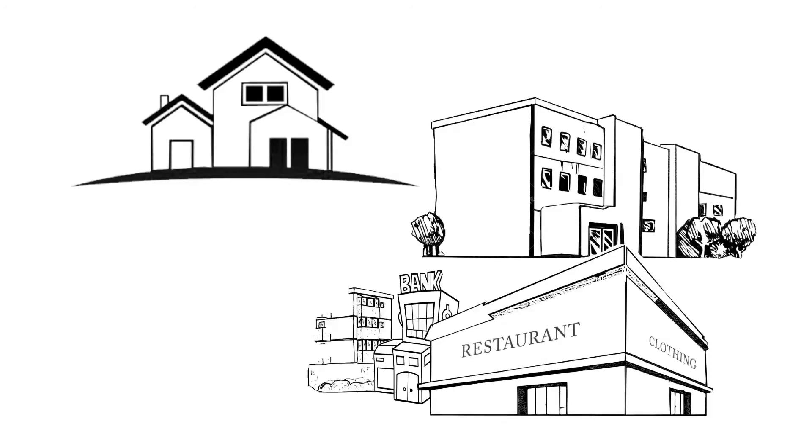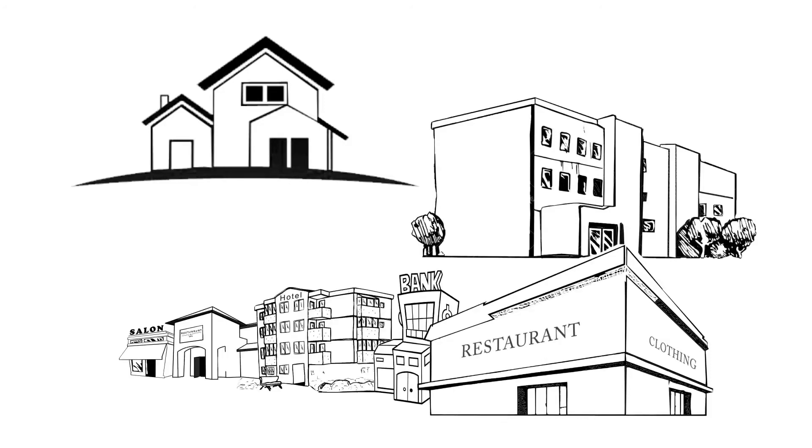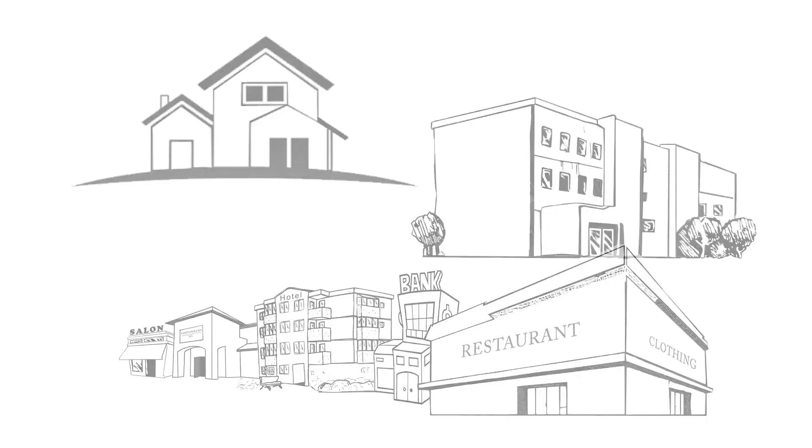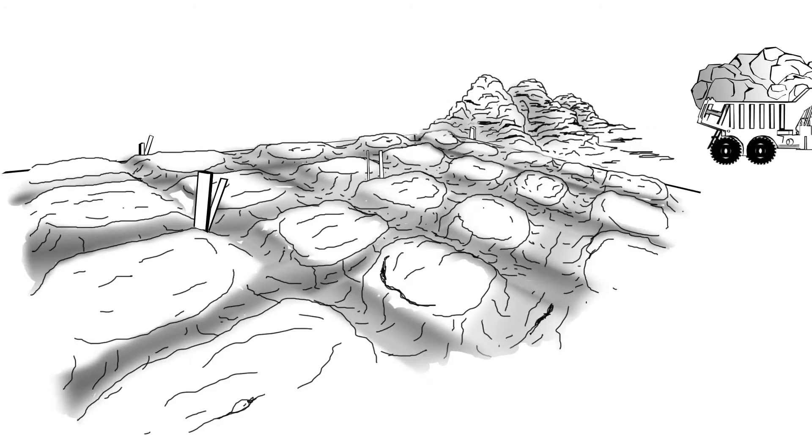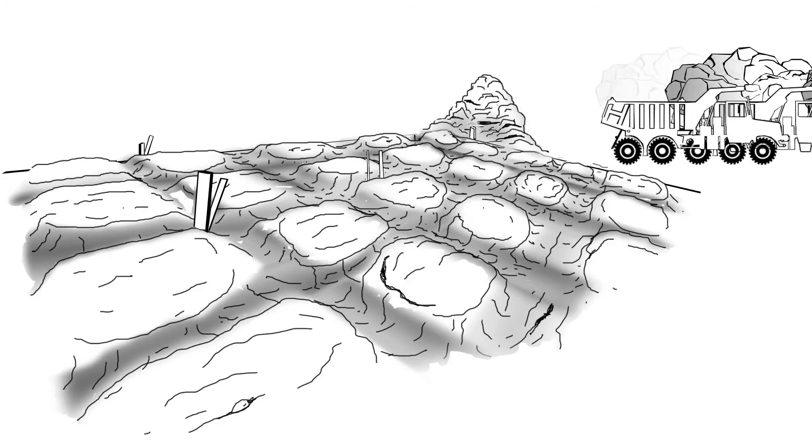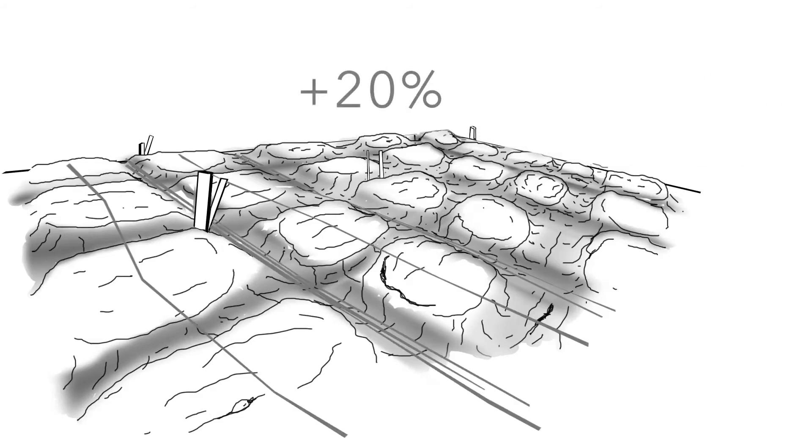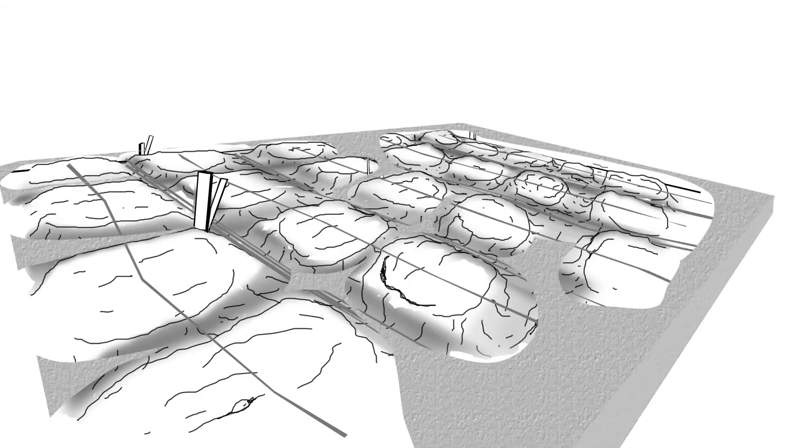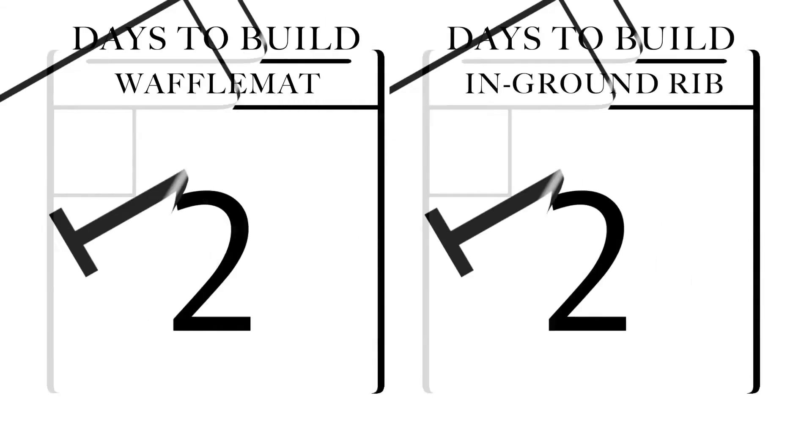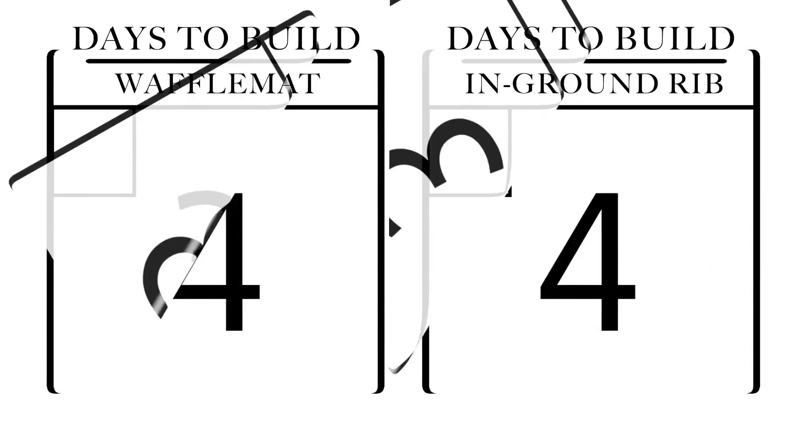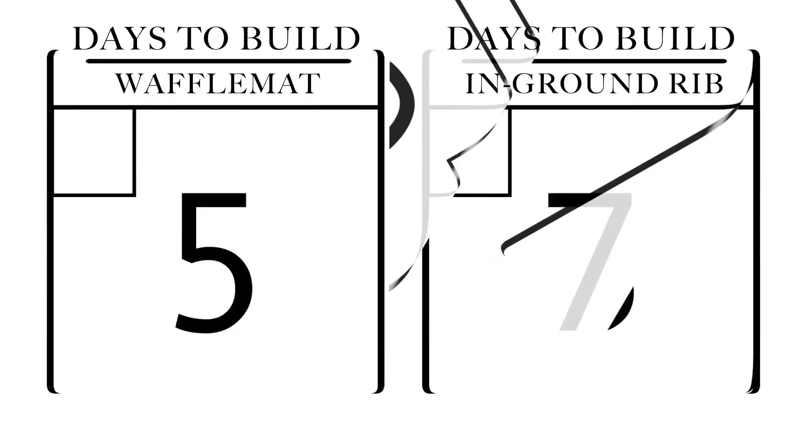The in-ground rib slab is a dirt form system requiring significant trenching and off haul of the soils that are dug up. It can also require 15 to 20 percent more reinforcing steel and multiple concrete placements for the trenches and then the top slab. All these extras add up to not only lots more in costs when compared to Waffle Mat but also lots more building cycle time, and that extra time is also extra money.